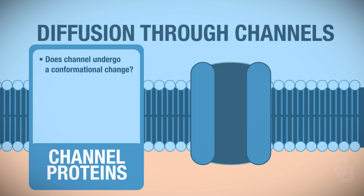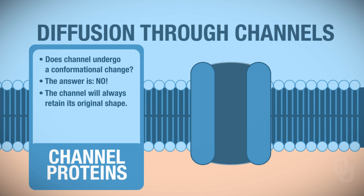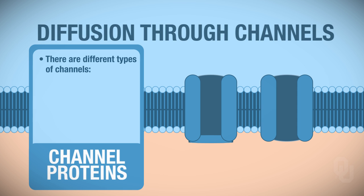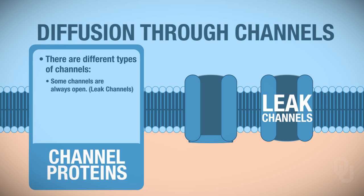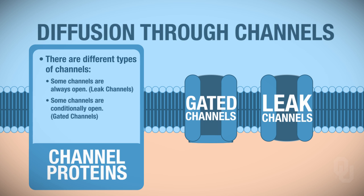Does a channel undergo a conformational change when solutes pass through? No — there's no conformational change, just as a drinking straw retains its shape. There are different types of channels: some channels are always open, called leak channels, and we'll be discussing those throughout the semester. We also have gated channels, with many subcategories we'll explore later. This concludes the video on facilitated diffusion.